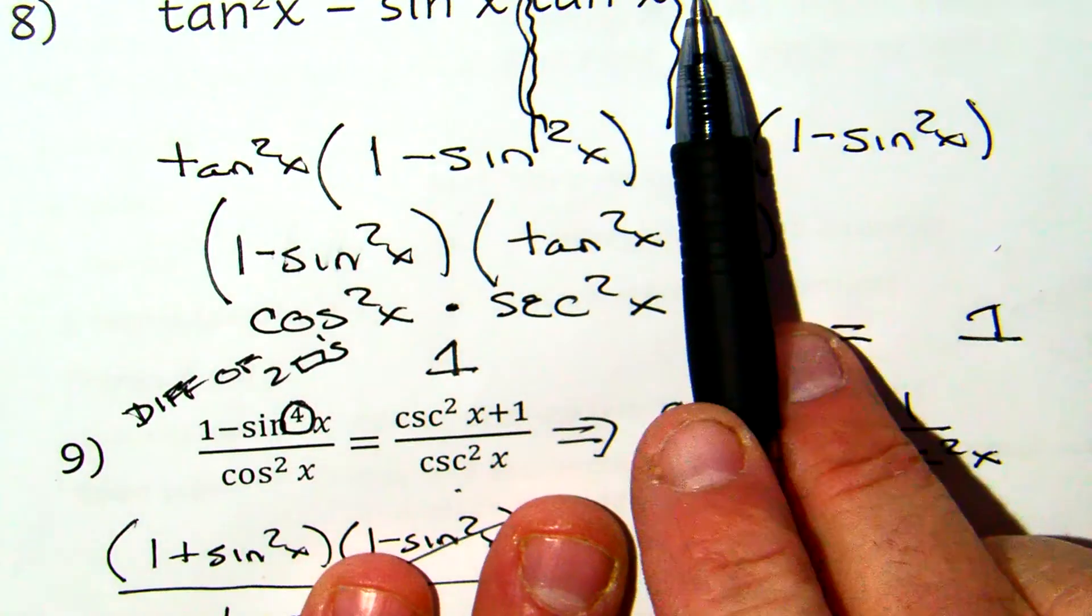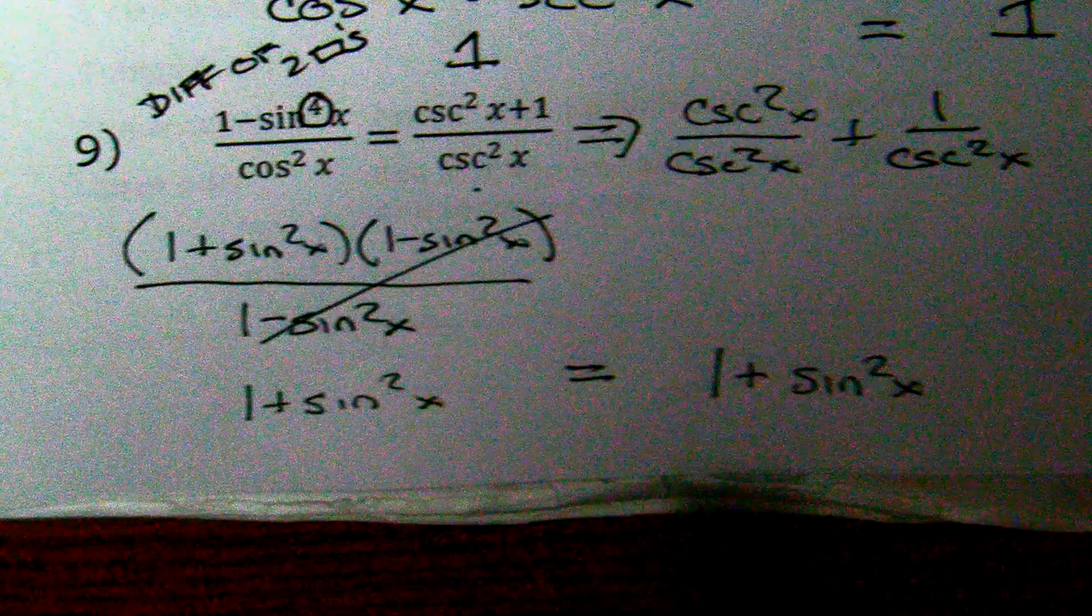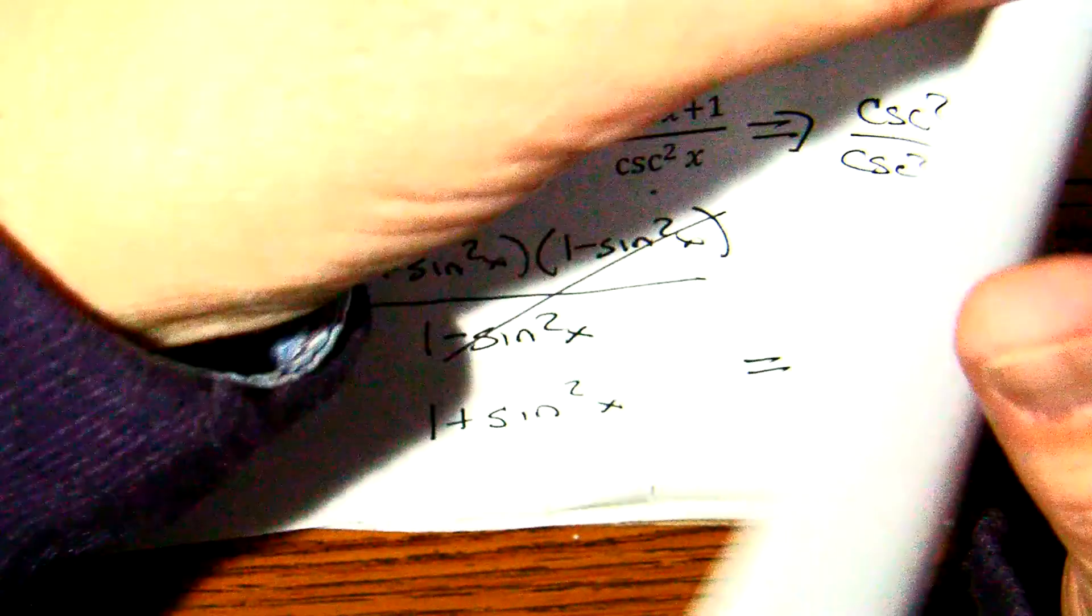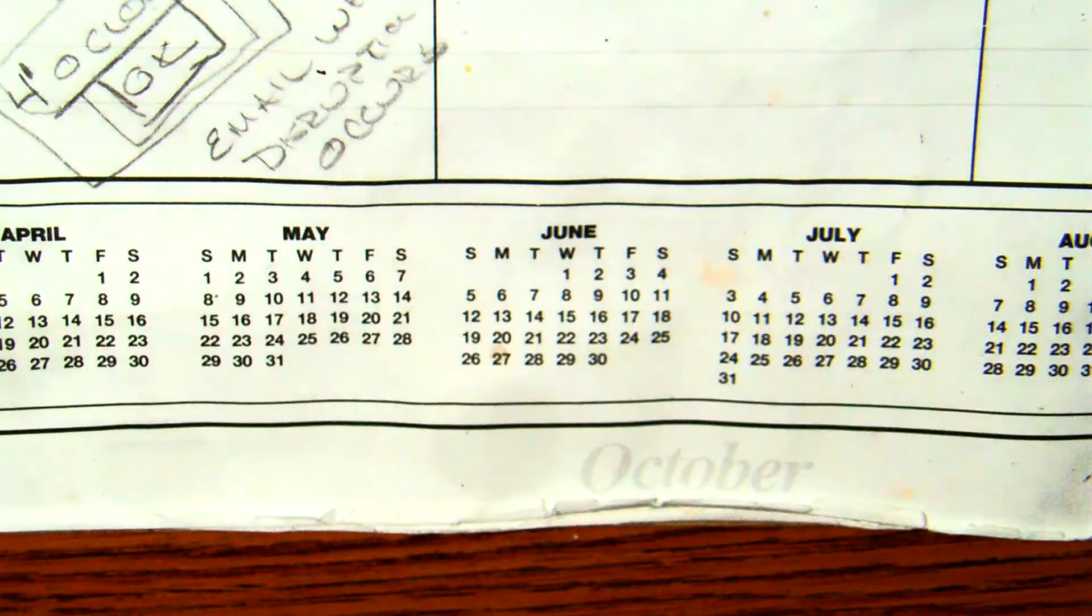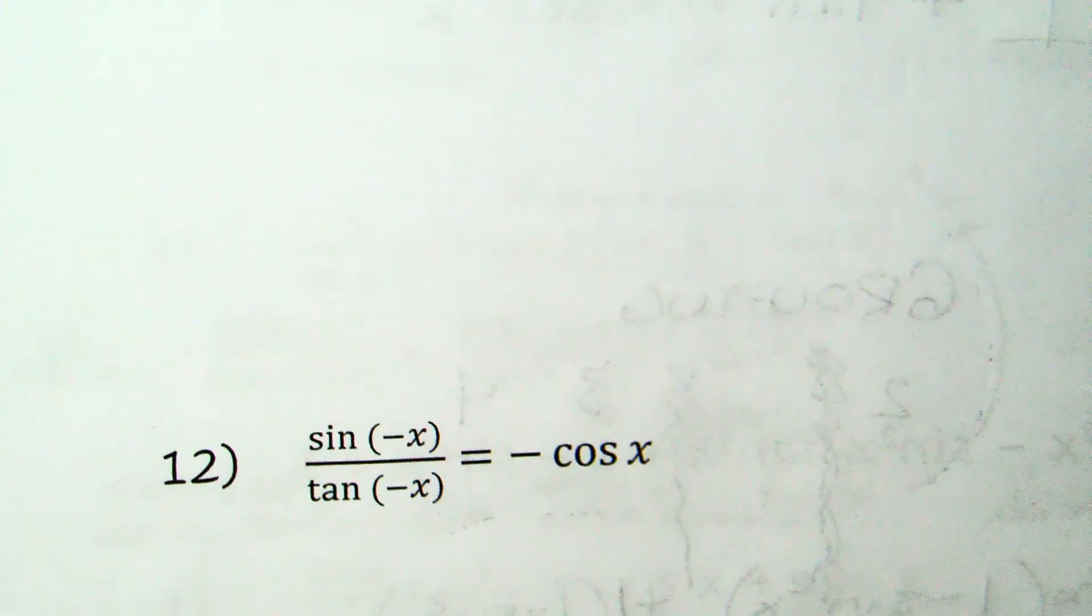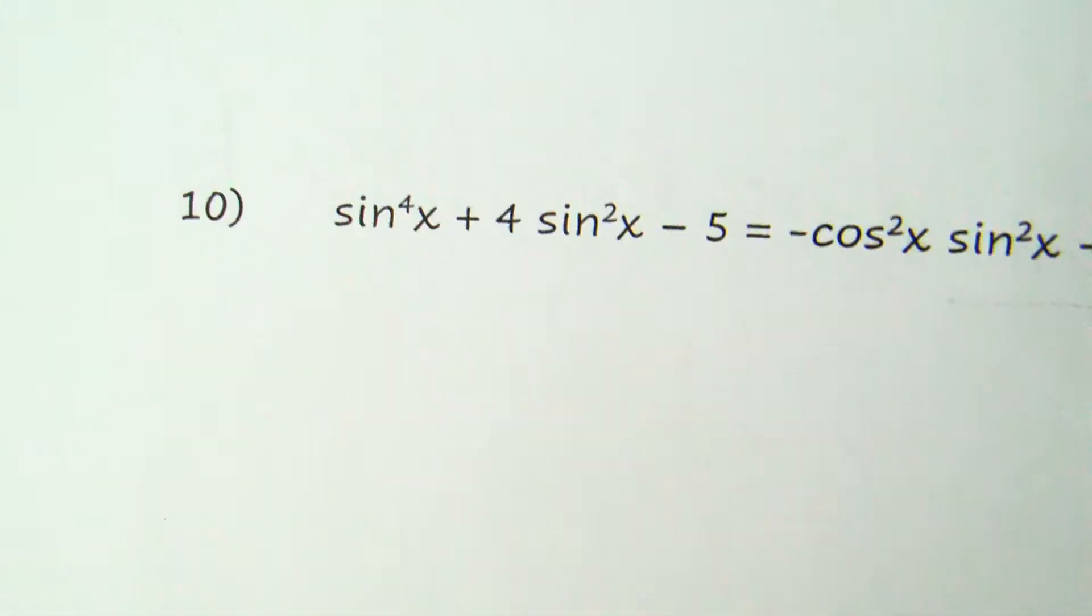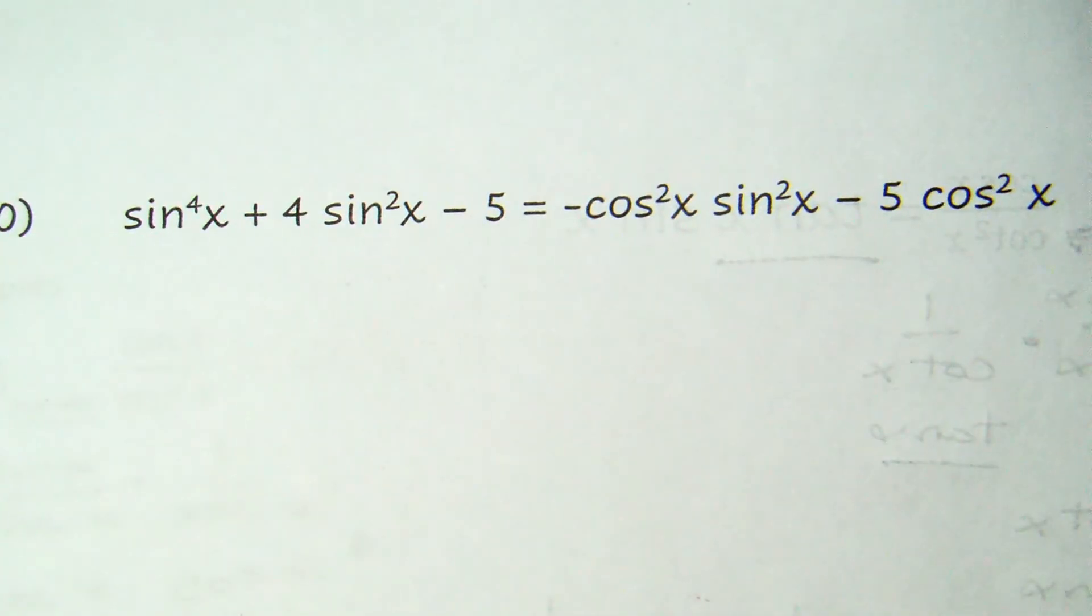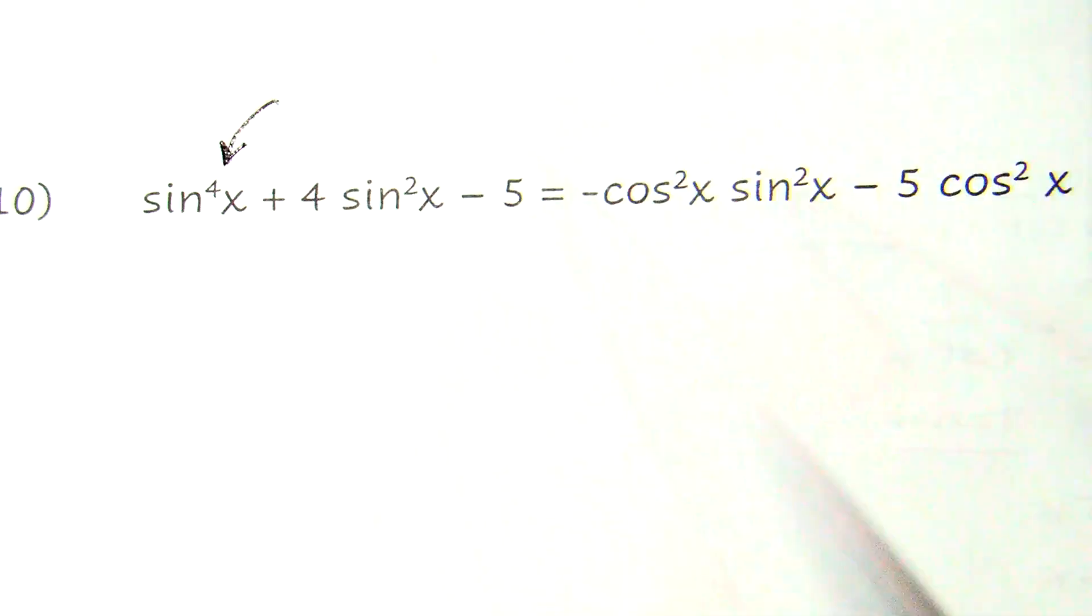So if you see four terms, it's grouping. If you see two terms with a degree greater than two, it's difference of two squares. If you see a trinomial, like you do in number ten, where the degree is not equal to two—in this case four—this reviews algebra two from last year. You're factoring a higher-degree polynomial that factors just like a trinomial.